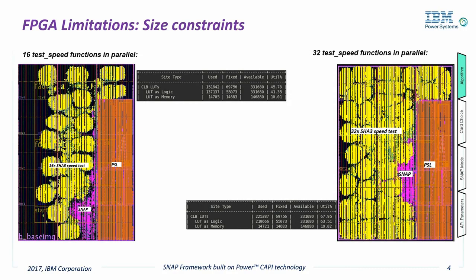A good example of a function we did in CapiSnap is a SHA-3 secure hash function called CatJack. This function was a great fit for an FPGA for multiple reasons. First, the customer knew it took significant CPU cycles to calculate. Second, it is numerically intensive. And third, it was highly parallelizable.